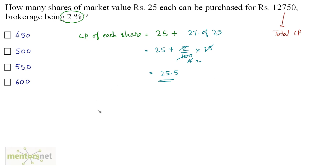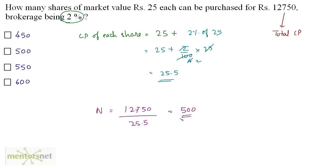We need the total number of shares. The number of shares equals the total investment made — that is the total cost price, 12,750 — divided by the cost price of each share, that's 25.5. When solved, that gives you 500. So the total number of shares are 500, and that's option B.